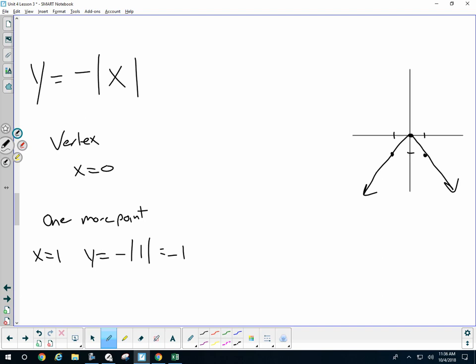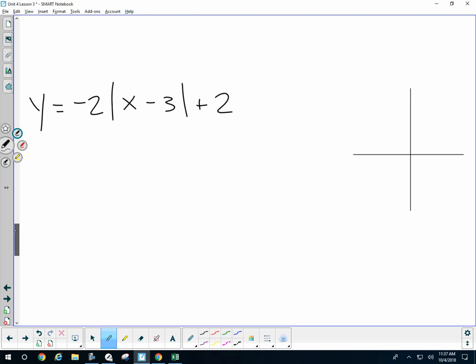If you just follow the same procedure, you will naturally get this flipped graph. There's nothing crazy to it. If you just follow find the vertex, find one other point, you will naturally see this flippedness, so long as we understand that the absolute value graph looks like a V.